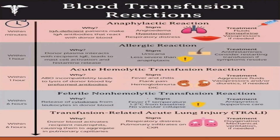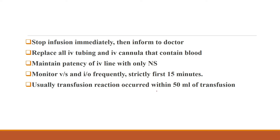Within six hours: febrile non-hemolytic transfusion reaction — caused by release of cytokines from leukocytes in donor blood; signs include a 1–2°C rise in temperature from baseline with no vascular collapse; treatment is antipyretics and supportive care. Transfusion-related acute lung injury (TRALI) can also occur within six hours — donor blood activates recipient neutrophils causing them to aggregate in pulmonary capillaries; signs include respiratory distress and pulmonary infiltrates on chest X-ray; treatment is oxygenation and mechanical ventilation if needed. In all transfusion reactions, stop the infusion immediately, inform the doctor, replace all IV tubing and cannula containing blood, ensure IV patency with normal saline only, and monitor vital signs and intake-output strictly.